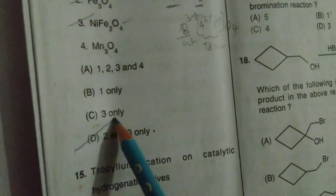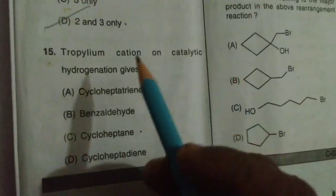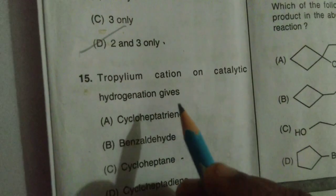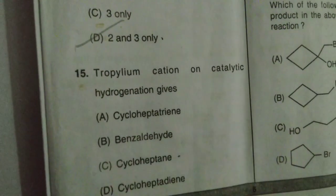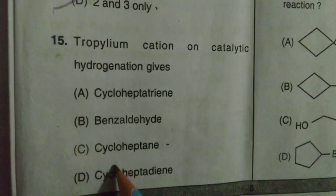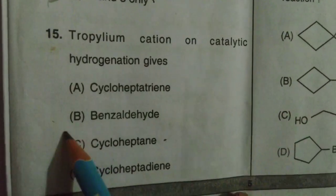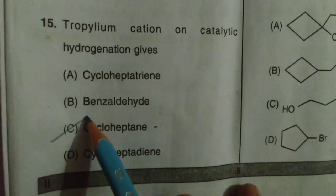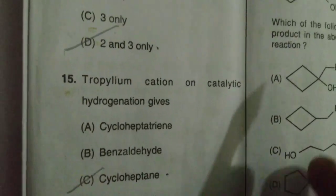Tropylium cation on catalytic hydrogenation gives cycloheptane. That is the correct answer.